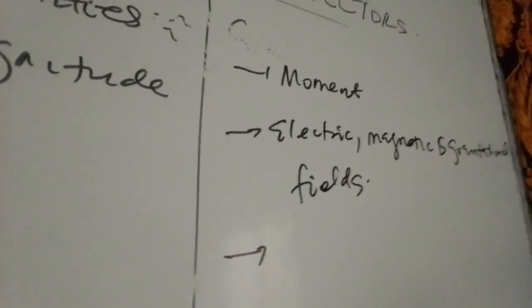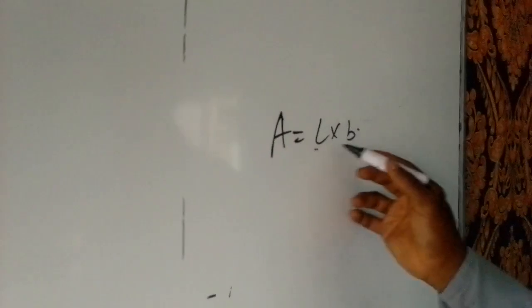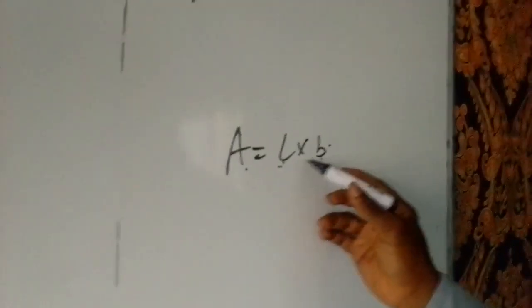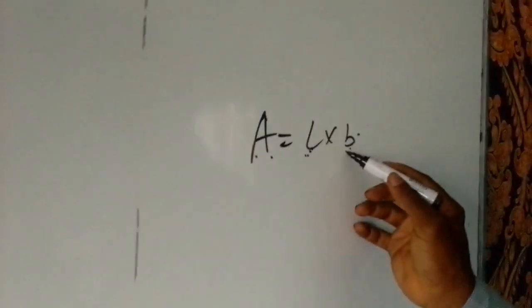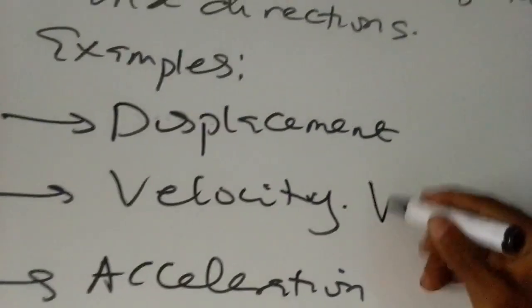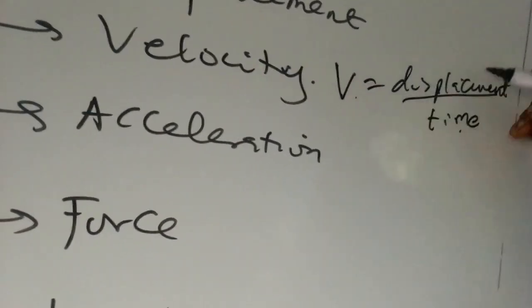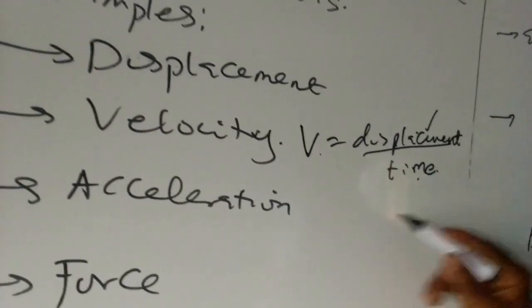To identify whether a derived quantity is a vector, look at its formula. If one of the quantities used to obtain it is a vector, the result is likely a vector. For example, velocity is displacement over time. Displacement is a vector, even though time is scalar — so velocity is a vector. Acceleration is velocity over time; velocity is a vector, so acceleration is a vector.